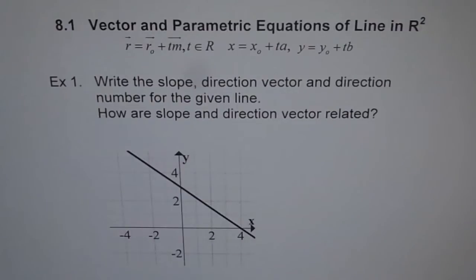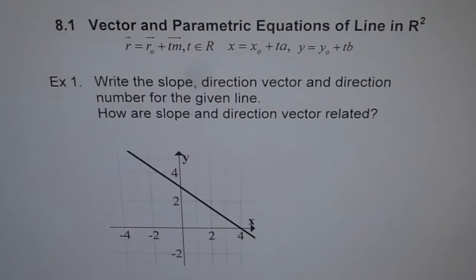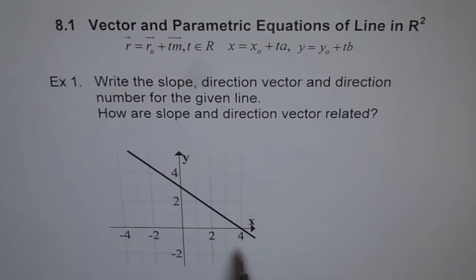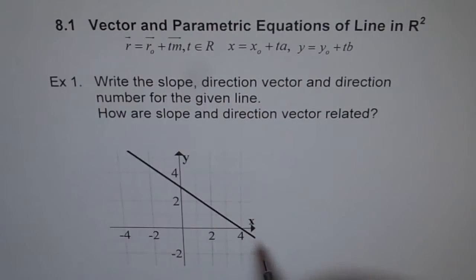Example 1: Write the slope, direction vector, and direction number for the given line. How are slope and direction vector related? So here is the line for us. What is the slope of the line?